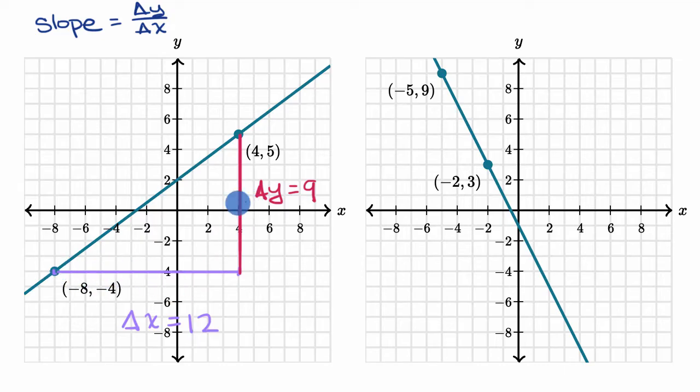So if we only used these two points, and we wanted to calculate the slope, our change in y over change in x would be nine over 12. So it looks like, at least just using those two points, the slope of this line is equal to nine over 12.